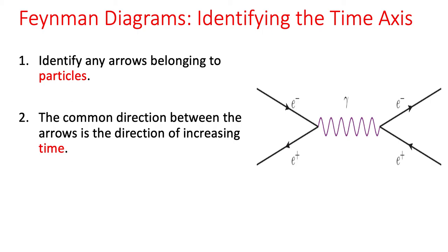We said in the previous video if we want to know where time is and how time works, we need to identify the particles and ignore the antiparticles. We notice the electrons, we've got two of them, are both moving either down to the right or up to the right. We need to identify a common direction. That common direction is to the right. The horizontal direction here is representing increasing time.